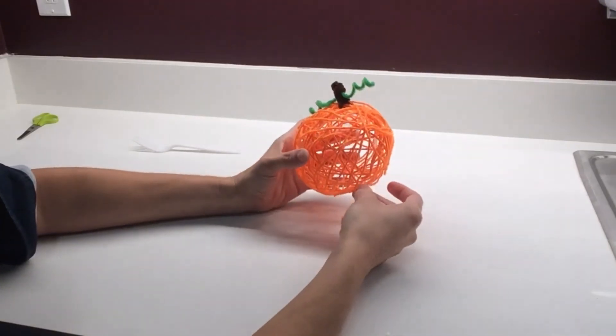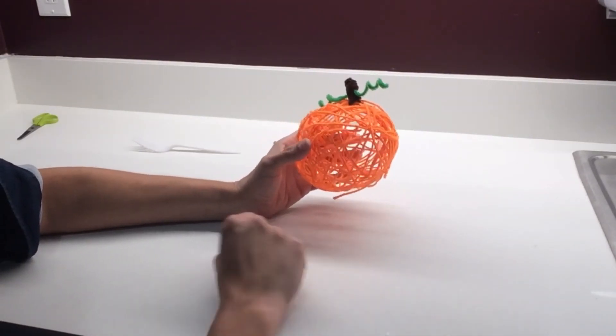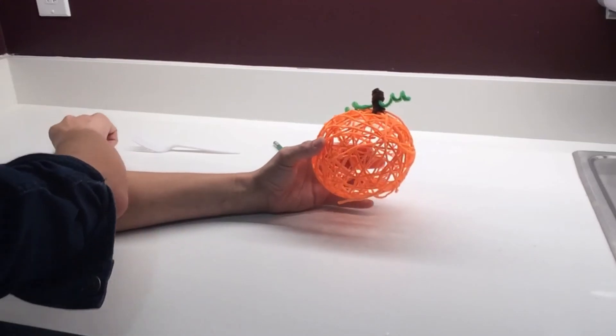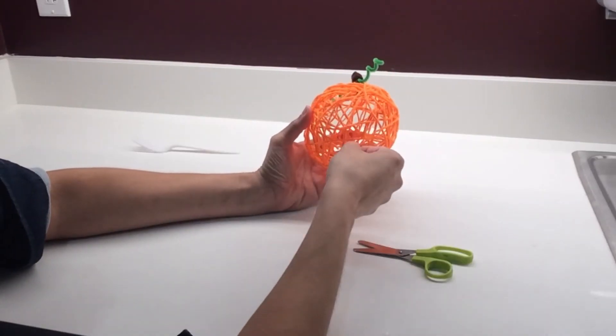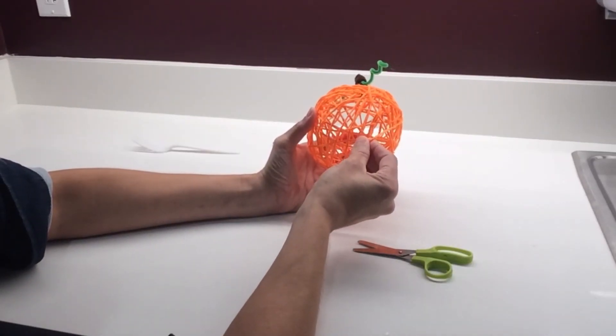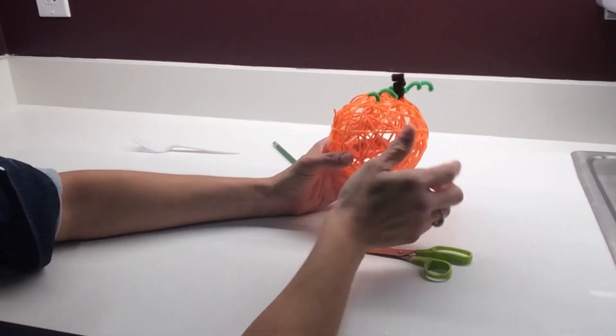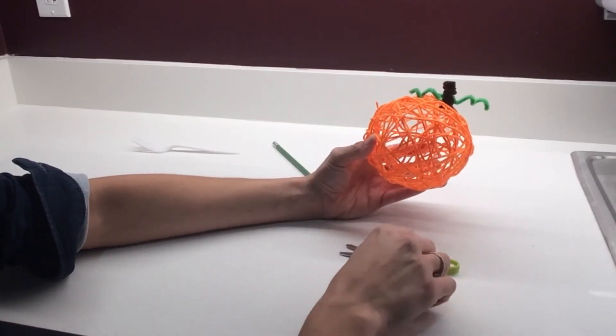And then at this point you may have some straggler pieces of yarn. So you can use your scissors to trim up any pieces that are sticking out or you can weave them back under to try and get them to stay in there. There's a little piece sticking up so I'm going to trim it off.